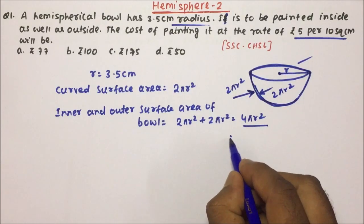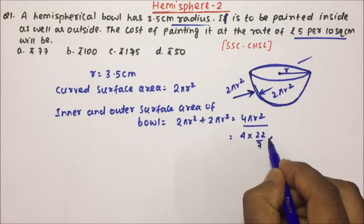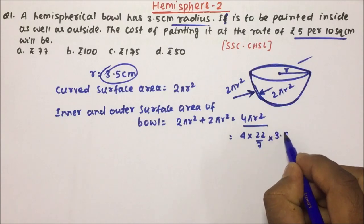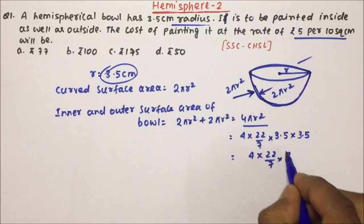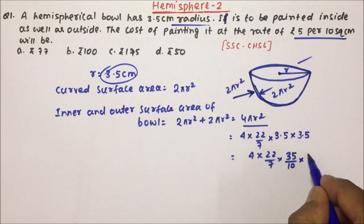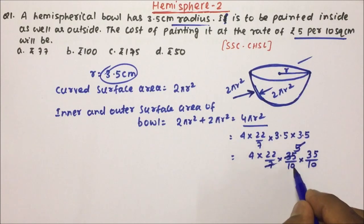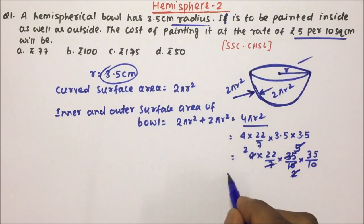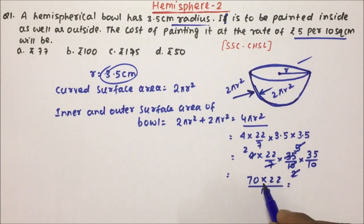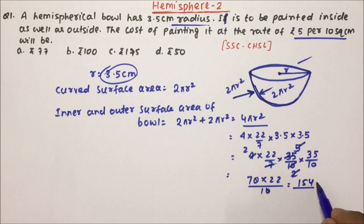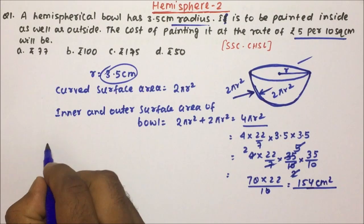So we have to calculate 4πr²: that is 4 × 22/7 × 3.5 × 3.5. To solve easily, 3.5 can be written as 35/10. After cancellations — 7 cancels with 35 giving 5, and 2 cancels — we get 70 × 2 divided by 10 × 10, which gives 154. So the total surface area is 154 square centimeters.